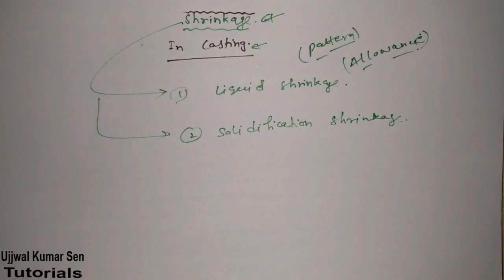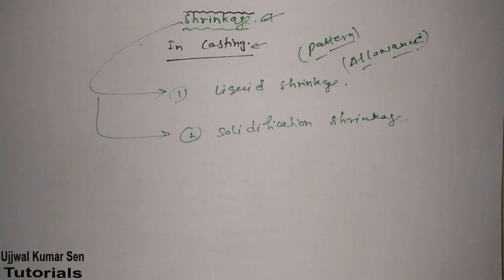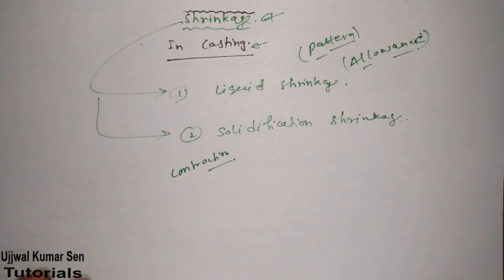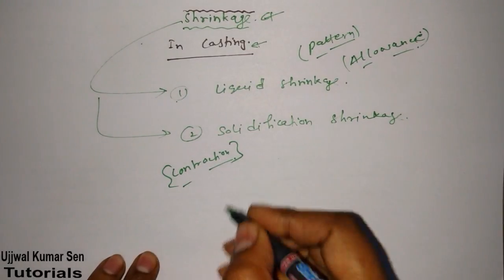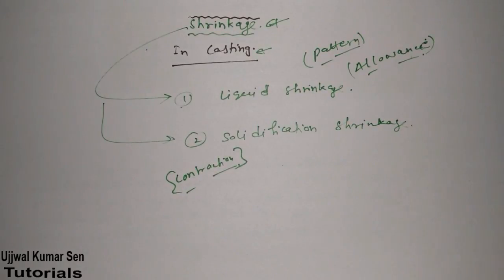I usually share both theoretical concepts and numerical concepts — those numericals already asked in GATE previous year papers. For this topic we got two questions already asked in GATE. I could share more about shrinkage but you can get that from any book. One more important thing: the other name of shrinkage is contraction. Don't get confused if an examination question mentions contraction due to solidification or liquid contraction.